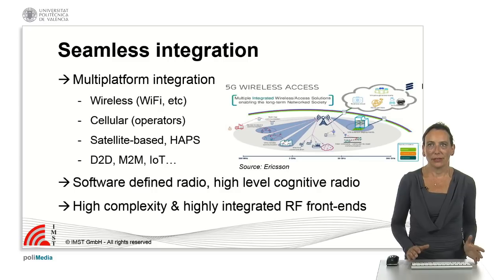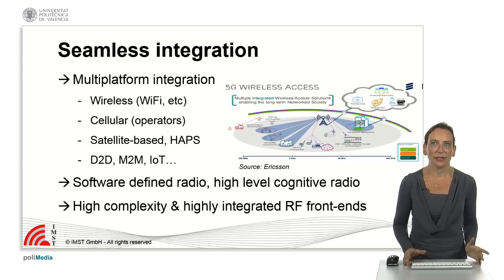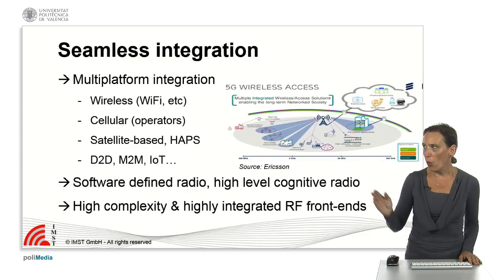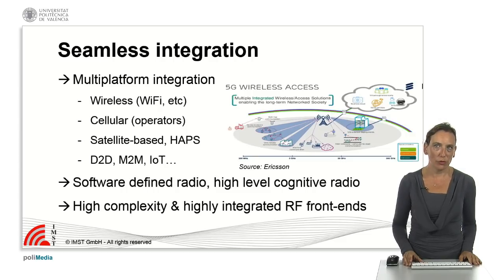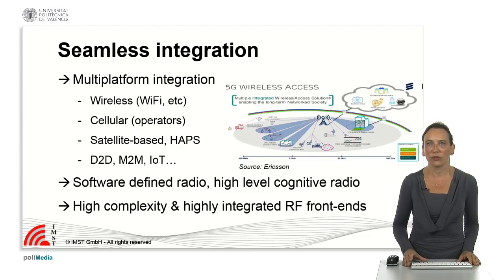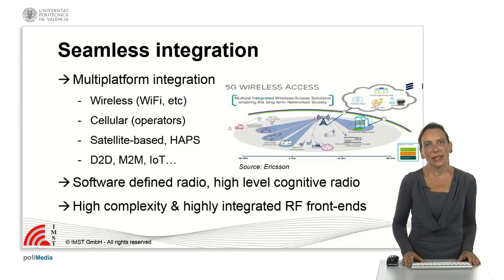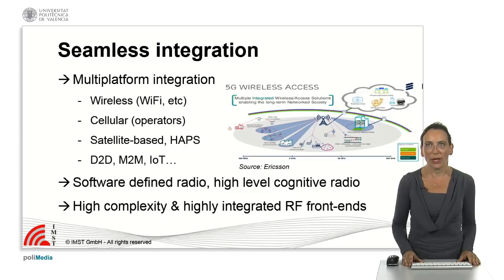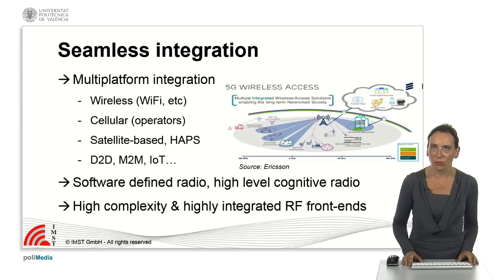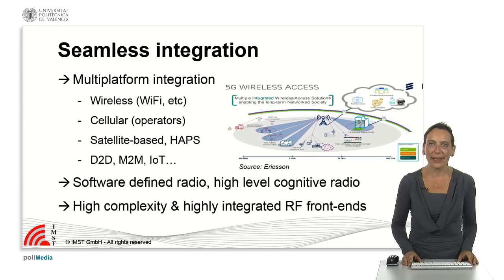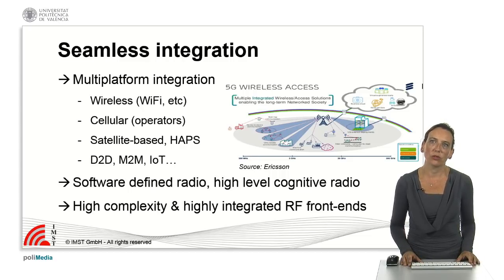When we say that we will need seamless integration, in 5G we will have different systems coexisting at different frequency bands and with different applications. We will have a multi-platform integration: wireless systems like Wi-Fi, cellular systems like mobile phones, and also applications based on satellites — for example sat-com communication, high altitude platforms, etc. We also have the challenge of device to device communications, machine to machine, Internet of Things, or what people are calling nowadays Internet of Everything. We will also have to revisit concepts like software defined radio or high-level cognitive radio. We will also need to develop highly complex and highly integrated RF frontends that are able to operate at different frequency bands or at very high frequency bands.